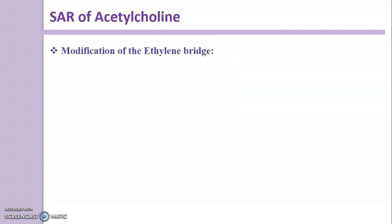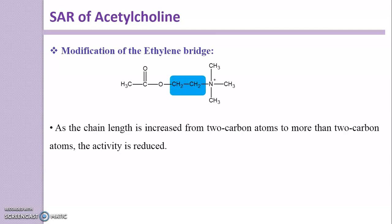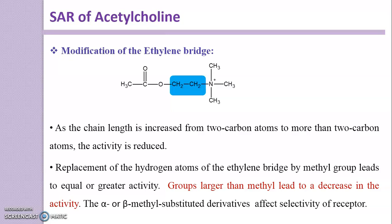Moving to modification of the ethylene bridge. As the chain length is increased from two carbon atoms to more than two carbon atoms, the activity is reduced. There are four atoms between the quaternary nitrogen and the terminal carbon — increasing atoms between the methyl group and quaternary amine leads to reduced activity. Even decreasing the chain size, such that only a methyl group is present, also affects activity. Replacement of hydrogen atoms on the ethylene bridge by a methyl group leads to equal or greater activity, but groups larger than methyl lead to decreased activity.